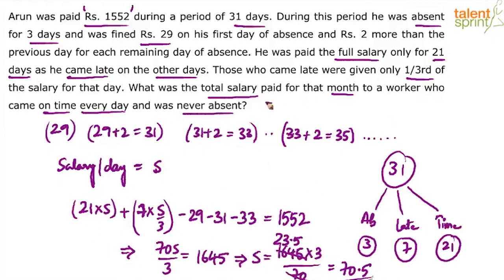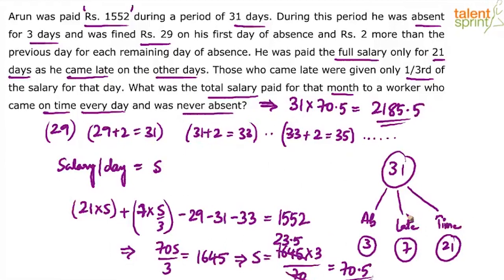He's asking us to find the total salary. If a worker is present for all days and never late, he gets the full salary for all 31 days. So 31 into S = 31 into 70.5. Breaking it down: 13 × 70.5 = 915, plus 18 × 70.5... actually, 31 × 70.5 = 2115 + 70.5 = 2185.5. The final answer is Rs. 2185.5.